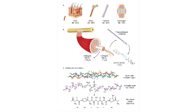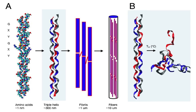Collagen has three polypeptide chains which twist around each other. The staggered ends mean one molecule ends at a different point from its neighbours — one ends here, another a little above, another a little lower — so weak spots are eliminated. This arrangement forms fibrils and then fibres. The hierarchy is: amino acids → triple helix → fibrils → fibres.